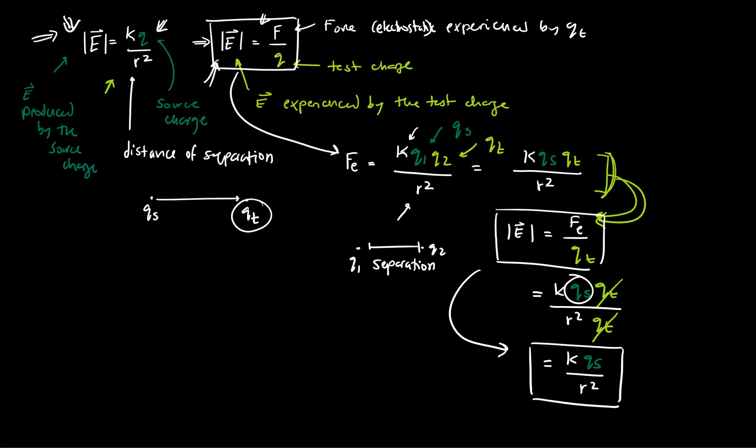So the situations that you should use each of these equations in are different. The first equation where you have E equals kq source over r squared, you can use this if you know information about qs, about the source charge. And then the second equation where it says the electric field is equal to the force over the test charge, you can use this if you know info about the test charge but maybe not the source charge.